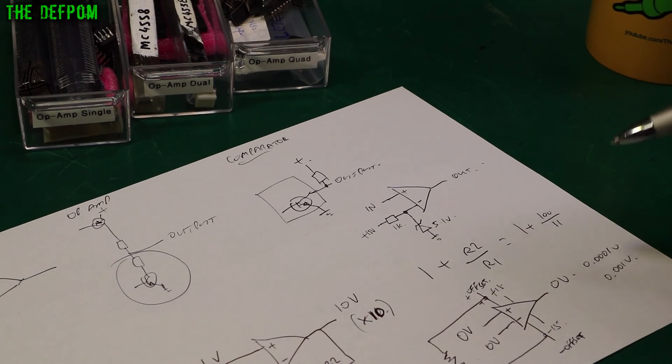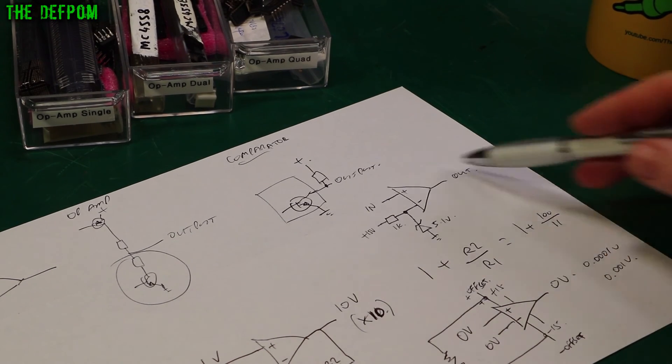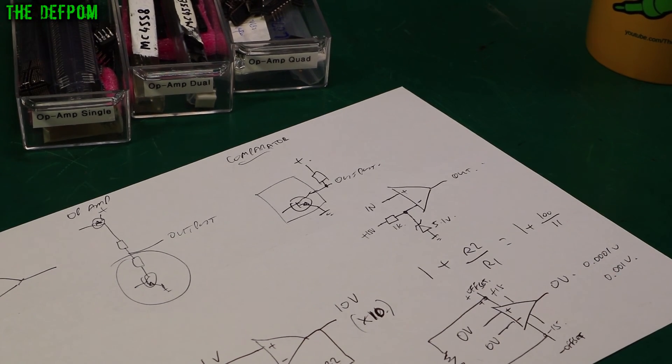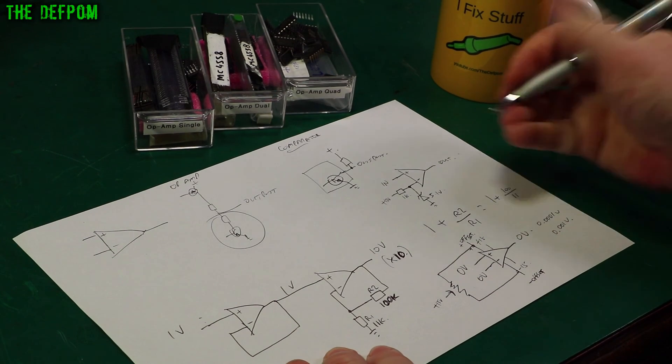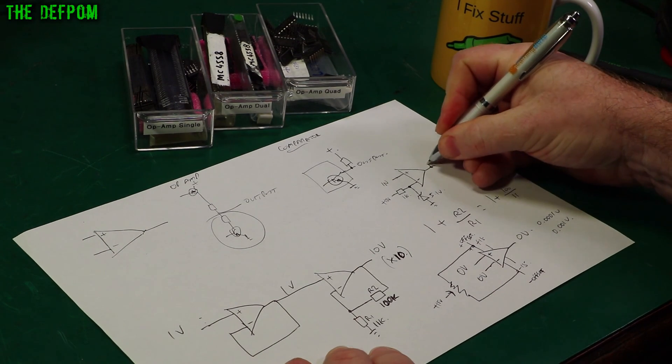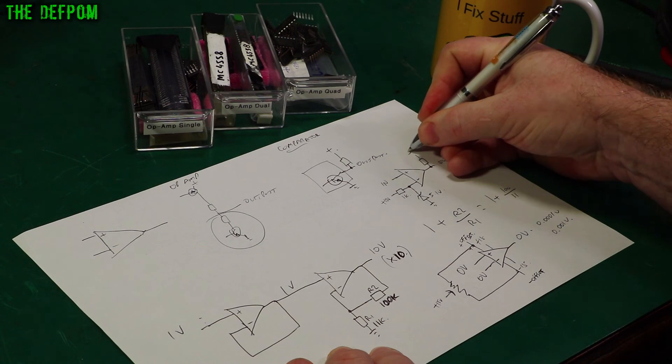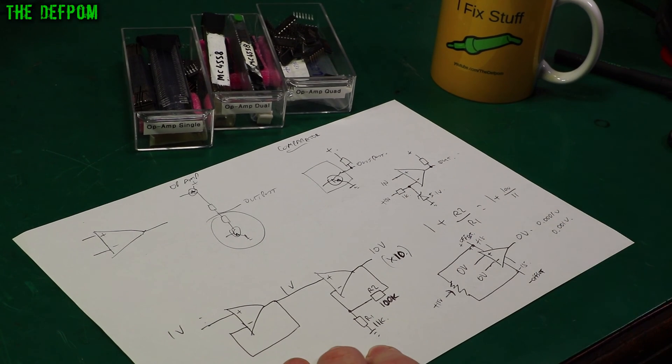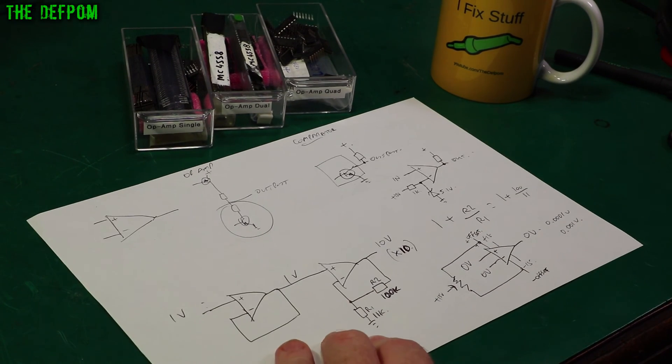An op-amp will do the same thing but like I said they're not really meant for that. They don't like being in that saturation region, they like to run as a linear amplifier. Another thing I should mention, because these are open collector outputs this would need a pull-up resistor to the positive rail. Otherwise it won't pull up, it'll only pull down.